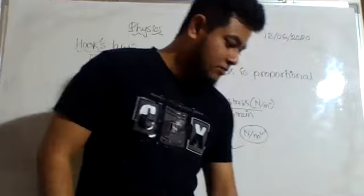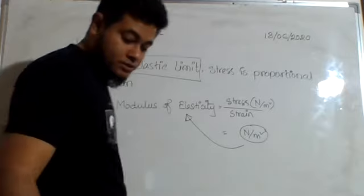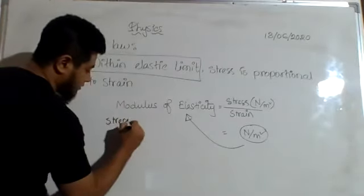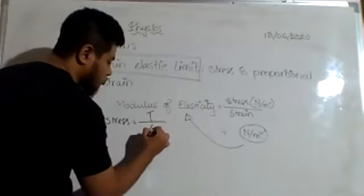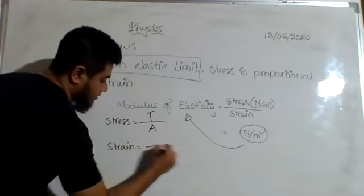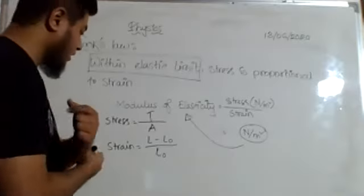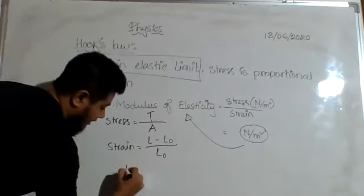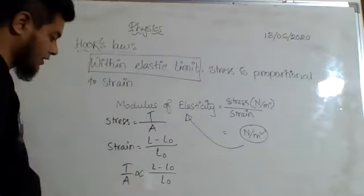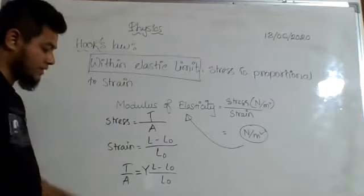Now in the example question, stress is equal to force divided by area. We have considered the force to be T or tension. And the strain is equal to L minus L not divided by L not. This is the strain. Now according to Hooke's law, we can write T by A is proportional to L minus L not by L not.